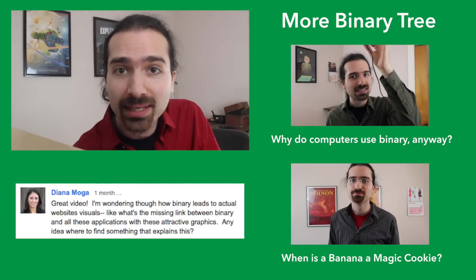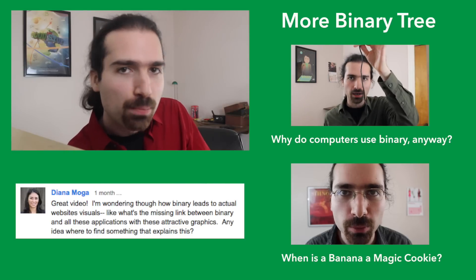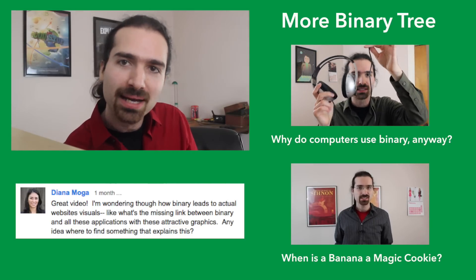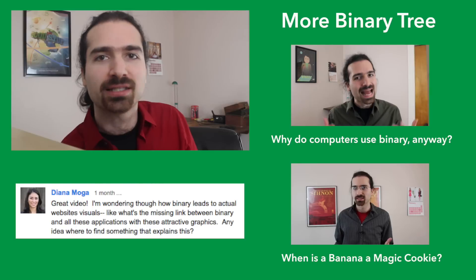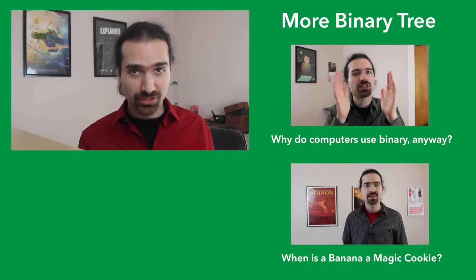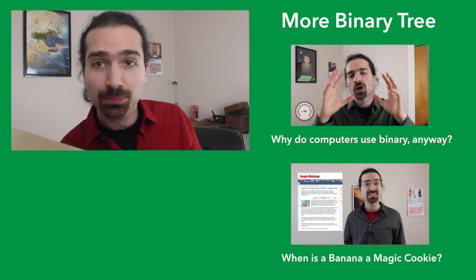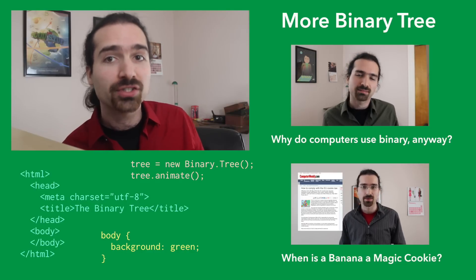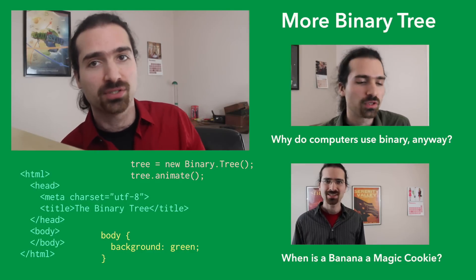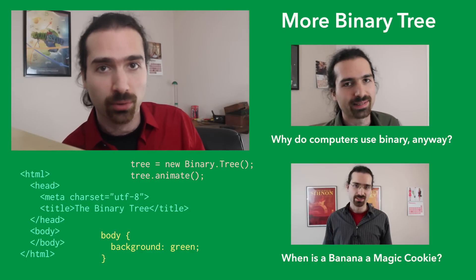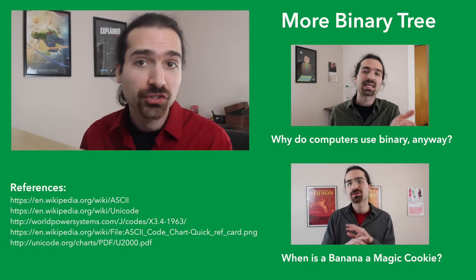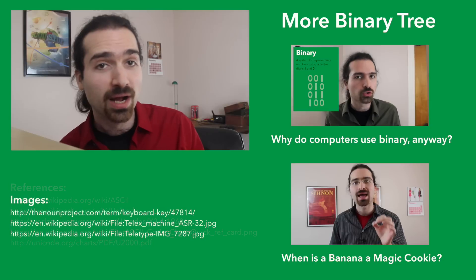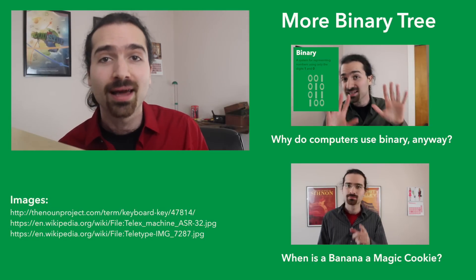She left a comment on the last episode about binary, asking: 'I'm wondering how binary leads to actual website visuals? What's the missing link between binary and all these applications with attractive graphics?' Of course, a big part of that is images, but these days a lot of what makes websites pretty is written in HTML, CSS, and JavaScript, which are all written in text. Character data is what drives most of the web, so these text encodings are super important. Thanks again, Diana, and if you've got a question you'd like answered on The Binary Tree, leave a comment below. Subscribe and like if you want to see more, and I'll see you next time.